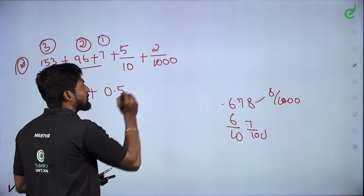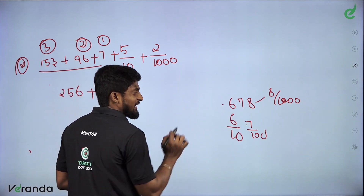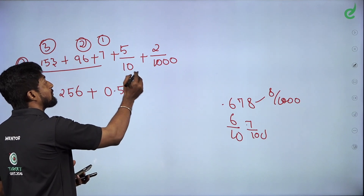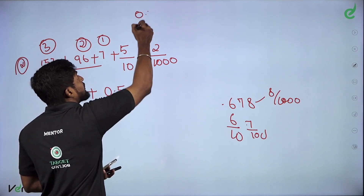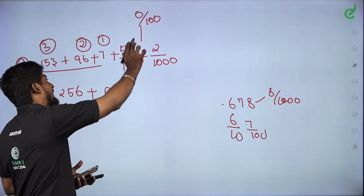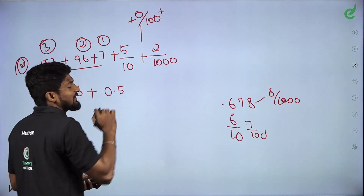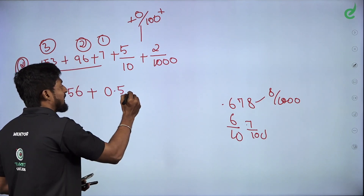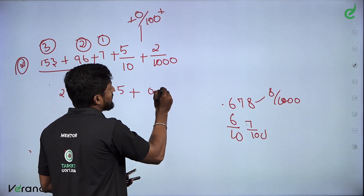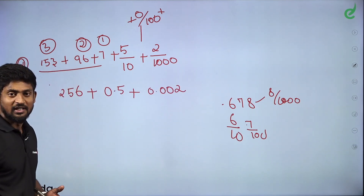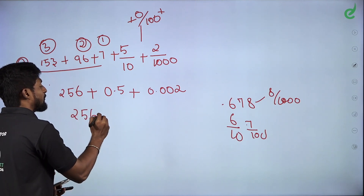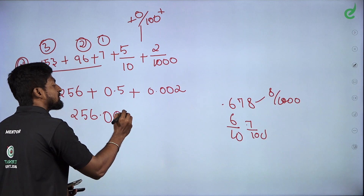Next, 2 by 1000. What is missing? This is 6, 7, 8 — that's ones, hundreds, thousands. This is not 100. What is missing? This is 0 by 100 — that's the missing value. That's the same value, it means that's the sum. So 2 by 1000 equals 0.002. We will answer: 256.000 plus 0.5 plus 0.002.